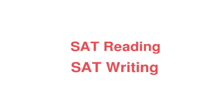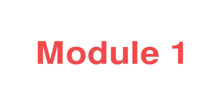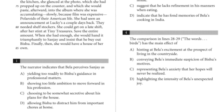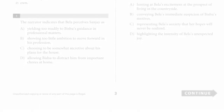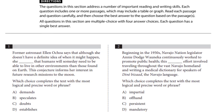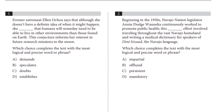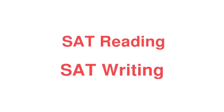In the reading and writing section, there are two modules: module 1 and module 2. Each module contains 27 questions, and 32 minutes are allocated to answer each module. Instead of long passages, on the digital SAT a short passage is provided for each question. Both modules contain questions of reading and writing.